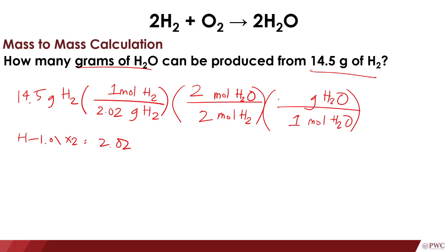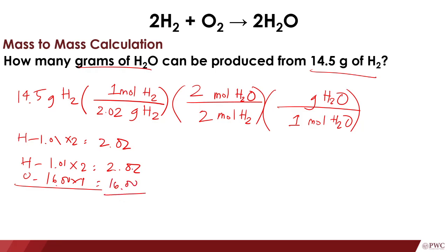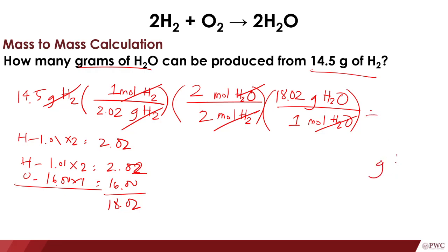For 1 mole of H₂O, the molar mass is: 1.01 times 2 equals 2.02, plus 16 times 1 equals 16, giving a molar mass of 18.02 grams per mole. Grams of H₂ cancel, moles of H₂ cancel, moles of H₂O cancel, and what's left is grams of H₂O — the quantity we're looking for.